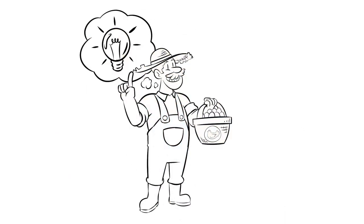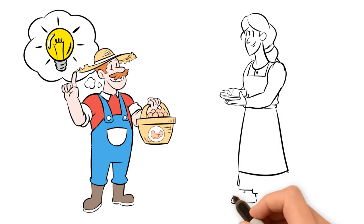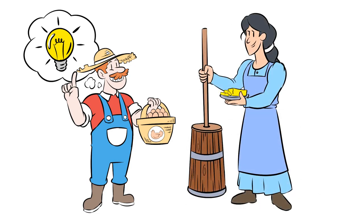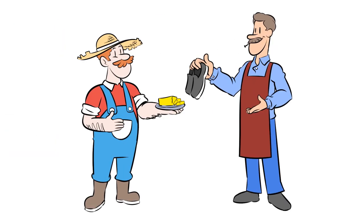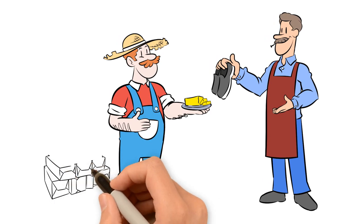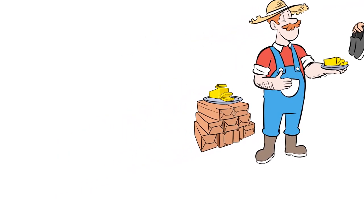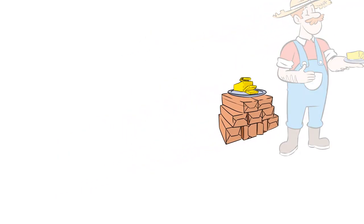But man adapted. Consider our farmer. Instead of offering eggs, he finds what the cobbler really wants: butter. Butter is now exchanged for shoes. If enough people also want butter, our farmer may buy more, not to use, but to conveniently exchange for other goods and services. This additional use further increases butter's demand, making it a medium of exchange.